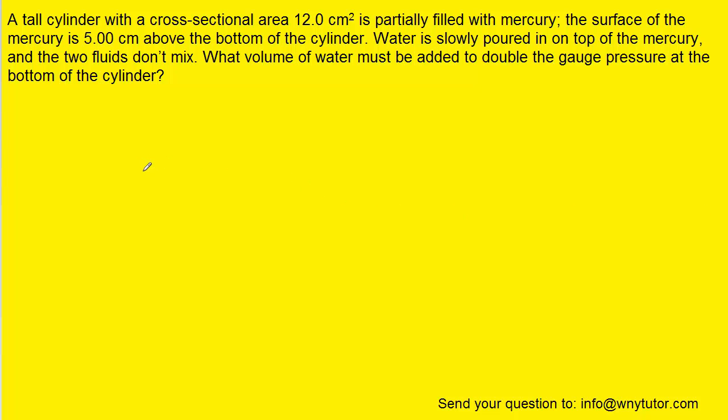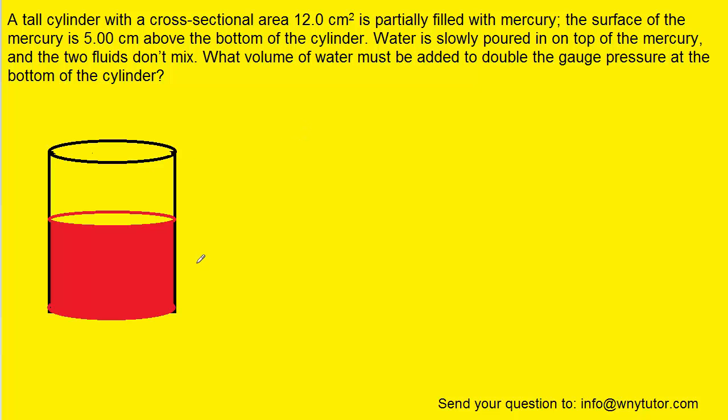To begin the problem, we're going to draw the tall cylinder partially filled with mercury. Here is that cylinder, and in red we have colored in the mercury. We were told that the surface of the mercury is 5 centimeters above the bottom of the cylinder, so we can mark a height of 5 centimeters on the diagram.